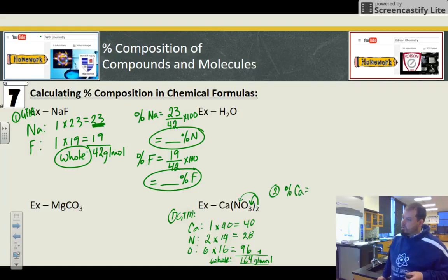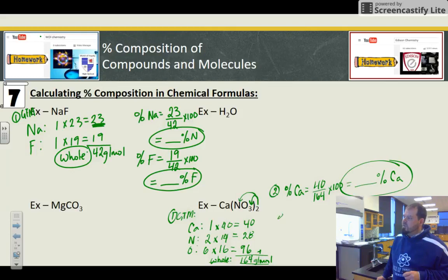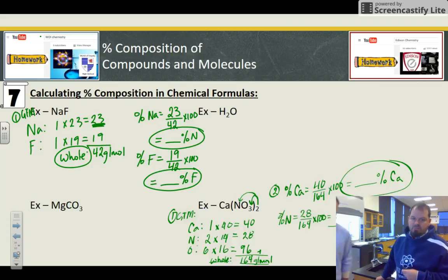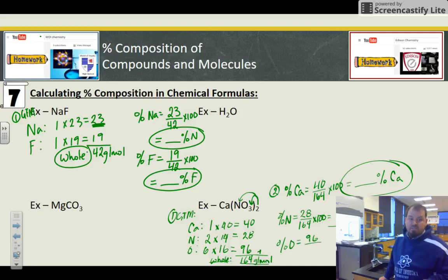So now percent Ca. Now it's going to be 40 because that's the mass of my part over 164 times 100. Now percent nitrogen. My part nitrogen is going to be 28, not 14. There are two nitrogens. So it's going to be 28 over 164 times 100 gives me some percent nitrogen. Well, since we're at it, let's do the oxygen too. We'll set it up. Percent oxygen now is 96. The total oxygen weighs 96 over 164 times 100. And there we go.